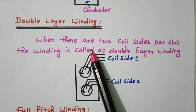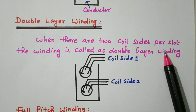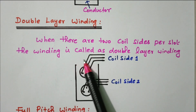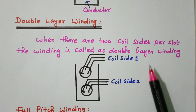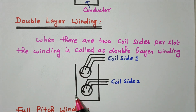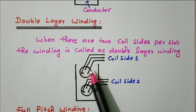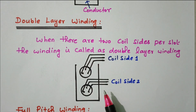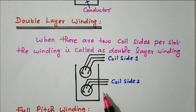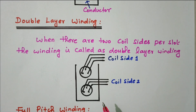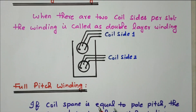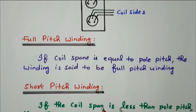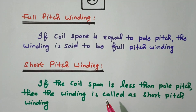When there are two coil sides per slot, the winding is said to be double layer winding. In the slot, there are two coil sides available. When a coil has two coil sides in a slot, it is called double layer winding. Now we'll go to the full pitch and short pitch winding details.